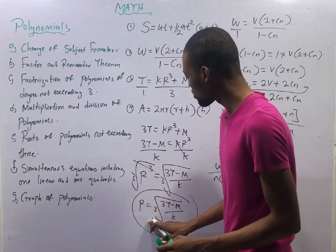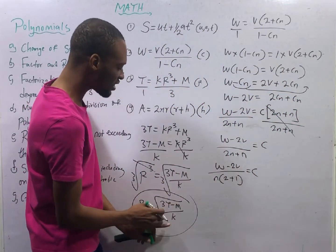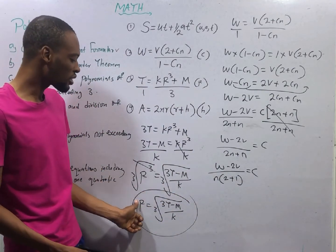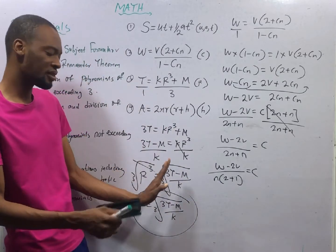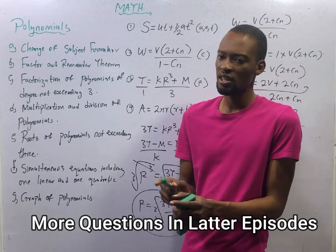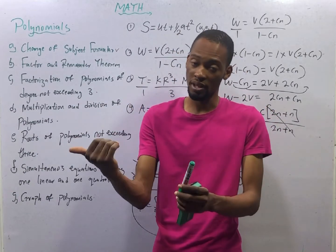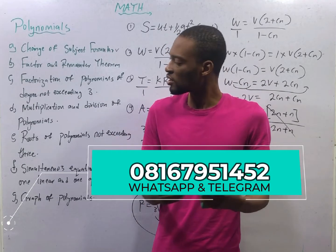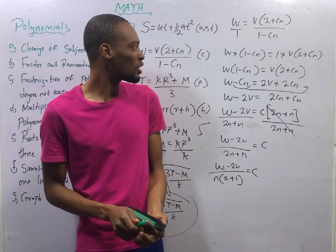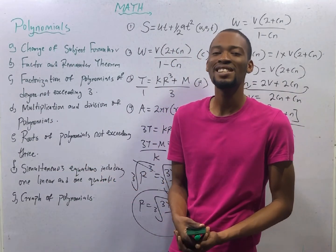If in this answer R equals the cube root of (3T minus M) over K and I say make K the subject formula, since everything is covered by a cube root, the first thing you do is cube both sides to remove the cube root. Then solve normally. To remove a square, square root both sides. To remove a square root, square both sides. To remove a cube, find the cube root of both sides. To remove a cube root, cube both sides. These are the basic operations you need to answer almost any change of subject formula question. Ladies and gentlemen, I hope you found this helpful. Let us proceed to other things we need to know under polynomials.